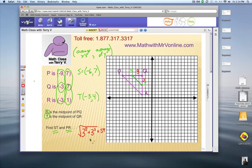So 9 plus 9 is 18, so it's the square root of 18. We can leave it in radical form or we can actually put it in the calculator and find out the approximate decimal value of that. But now PR.